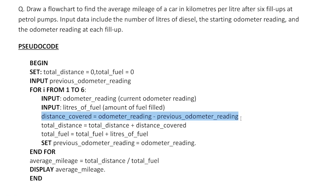Calculate distance covered: current automated reading minus previous automated reading. Then update total distance: total distance equals total distance plus distance covered.